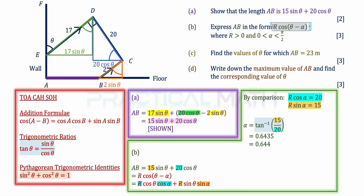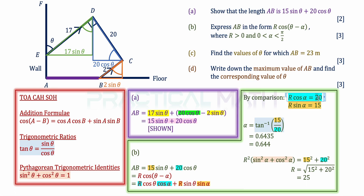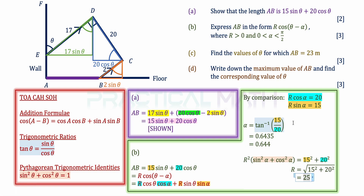To find R, square both equations: R squared cos squared alpha plus R squared sin squared alpha equals 20 squared plus 15 squared. Factoring out R squared and applying the Pythagorean identity sin squared alpha plus cos squared alpha = 1, we get R squared = 15 squared plus 20 squared. Taking the square root gives R = 25. Therefore AB = 25 cos(theta minus 0.644), and that is the answer for part B.